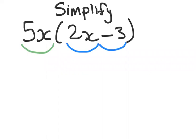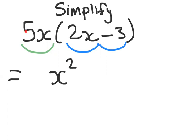Very important: always keep the minus as part of the term. So first we say 5x times 2x. We first multiply the x's — x times x gives x squared — and then we do the numbers: 5 multiplied by 2 gives us 10. So the first part is 10x squared.